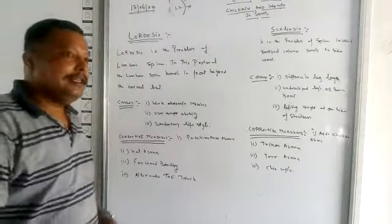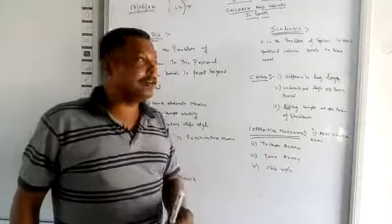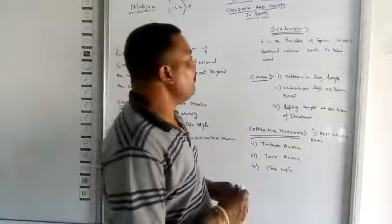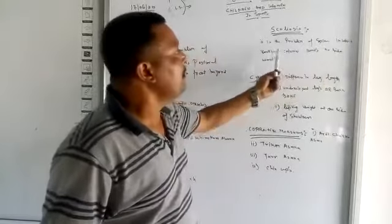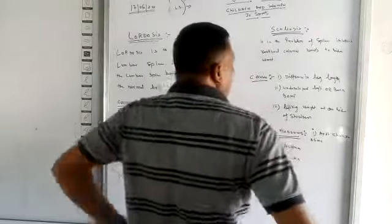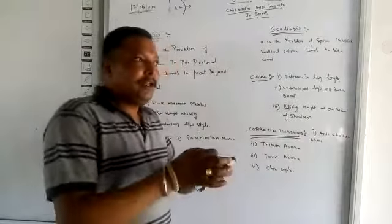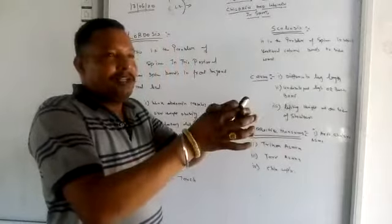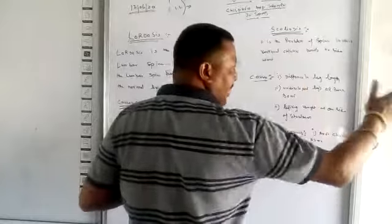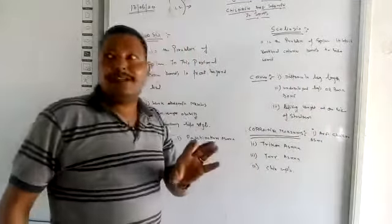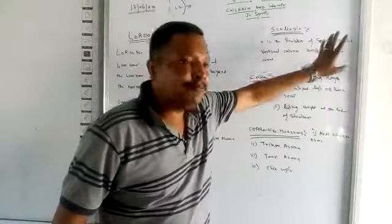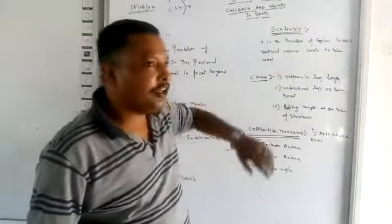Now students, we come to the last postural deformity according to your syllabus, that is known as Scoliosis. Scoliosis is the problem of the spine in which the vertebral column bends to the side. As everyone knows, our spine is made up of a combination of vertebral columns, and when those vertebral columns bend towards the right or left, the human body is suffering from Scoliosis postural deformity.